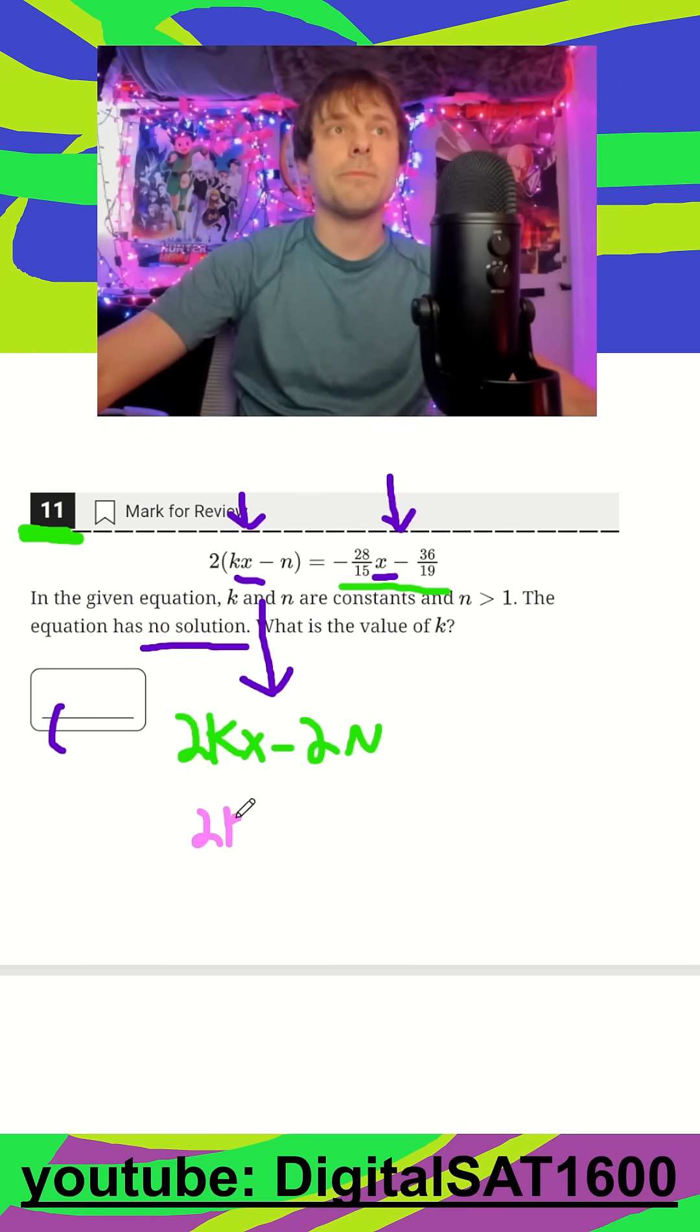I can just say, okay, our 2k should be equal to my negative 28 over 15, and then I can divide both sides by 2.